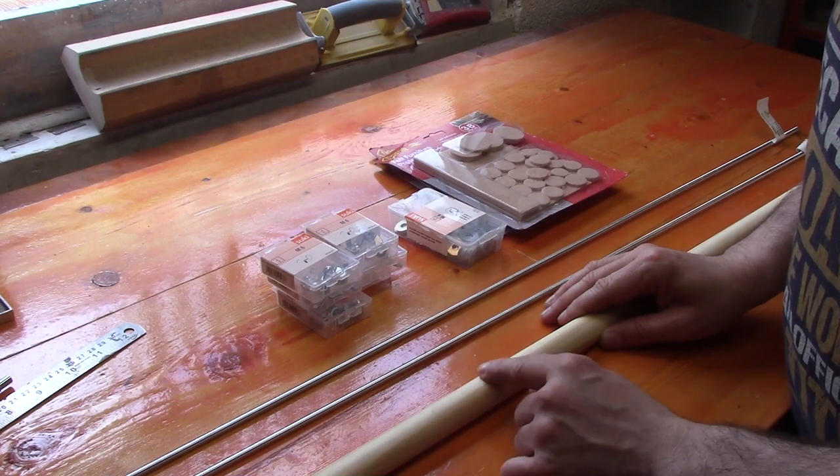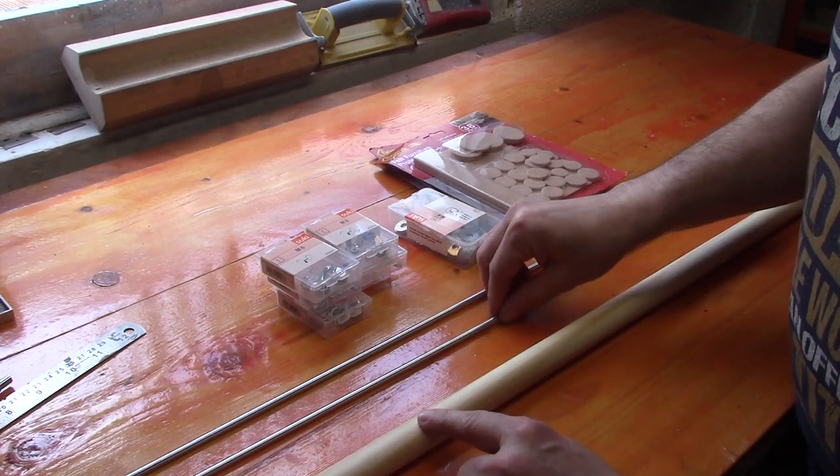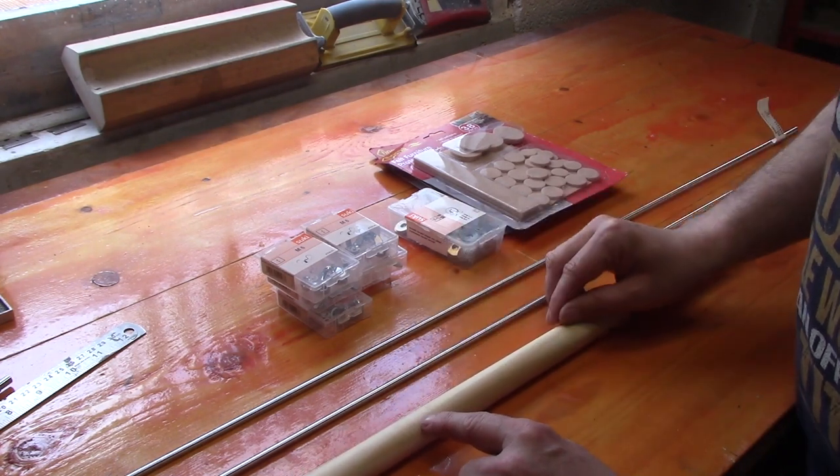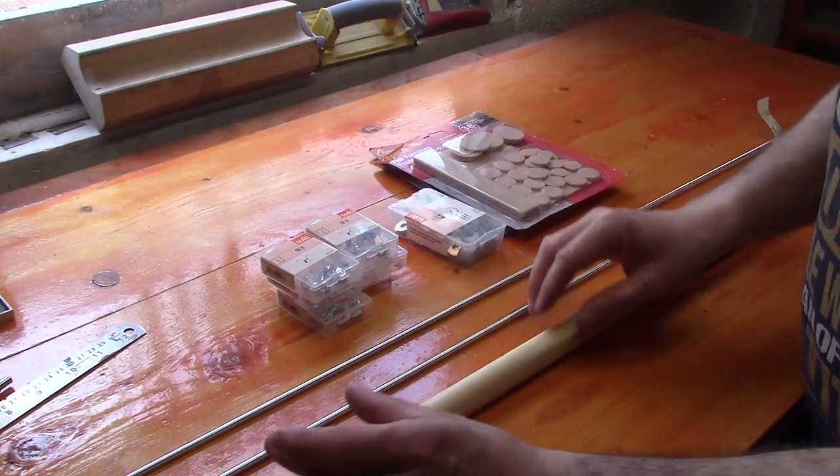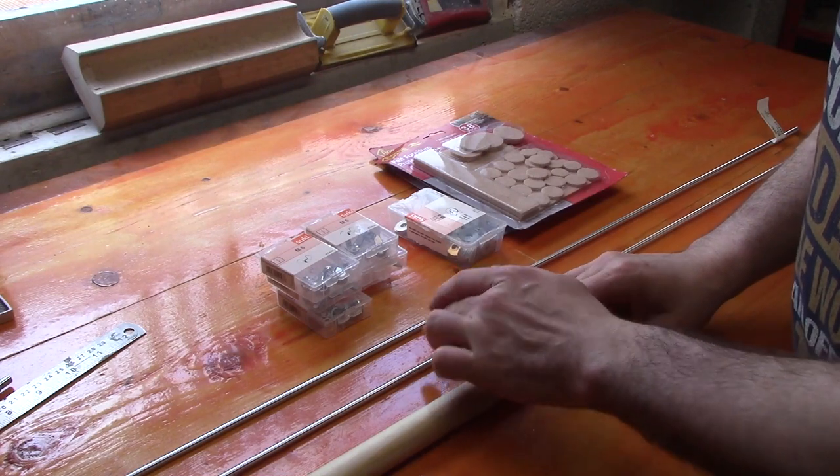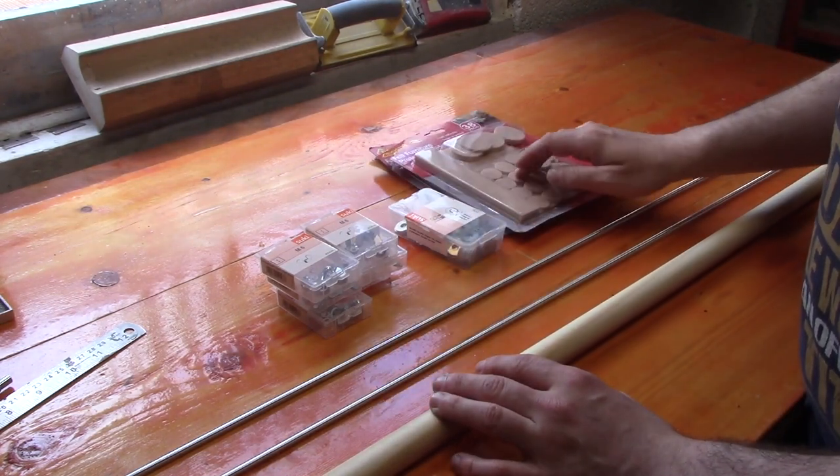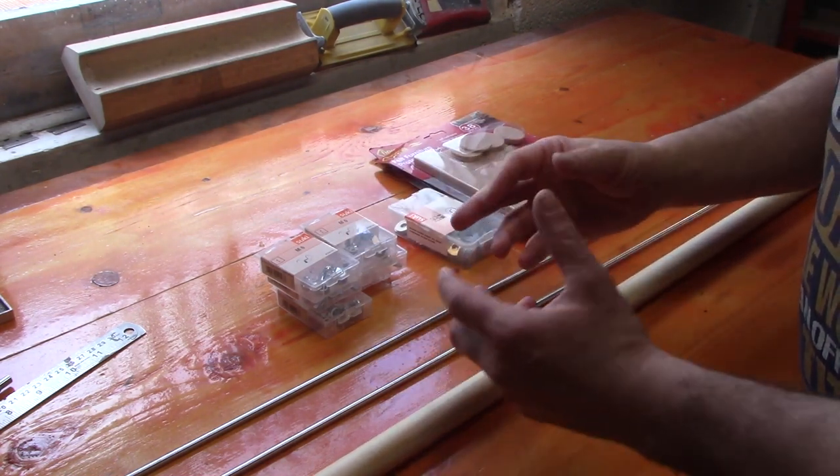So the plan is to cut up the dowel into a little over one inch pieces, cut our threaded rod into 200 millimeter pieces, and then put the dowel pieces onto the end of each threaded rod with a washer and wing nut so we can adjust them.